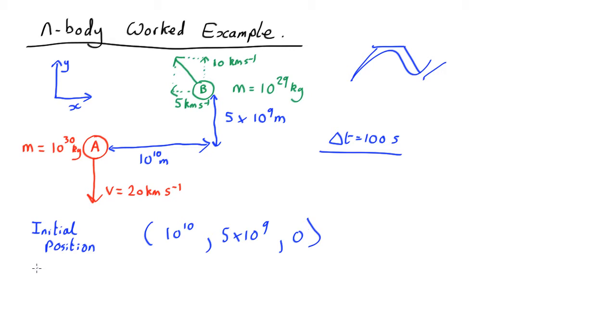Now the final position is just going to be the starting position plus delta t times the velocity. So it will be 10 to the 10 in x minus 100 delta t times the velocity which is 5000 meters per second. In y its starting position, in this case it's plus because it's moving in the plus y direction, plus the time step 100 times 10 kilometers per second, 10,000 meters per second and still nothing in z.